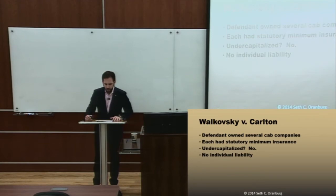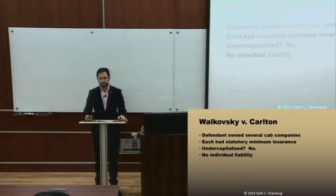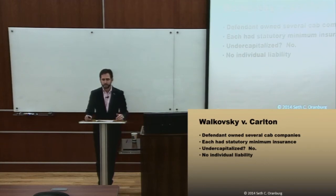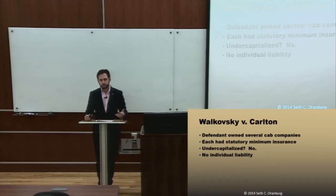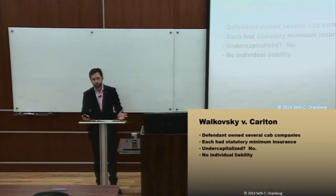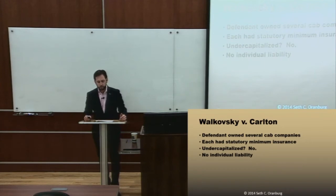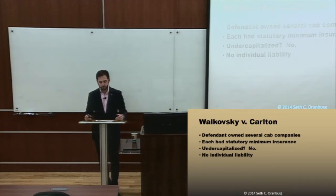Let's look at our first case, Walkovszky v. Carlton. Here, a defendant owned several cab companies, and the cab companies had the minimum amount of insurance — $25,000, which is all New York required. This was a time before medallions. The company only had $25,000 of insurance, which was the statutory required amount. The plaintiff got hurt and was injured for more than that amount, tried to recover, couldn't due to the limited insurance, and tried to go after the shareholder directly. Was the company undercapitalized? No — the company met its statutory requirements, and the corporate form was respected. So here we see a case showing that the corporate form was generally respected.